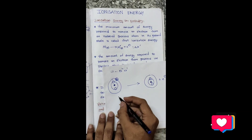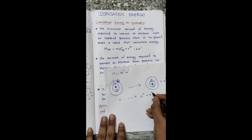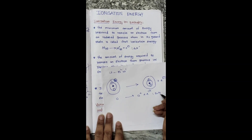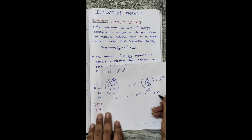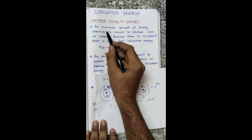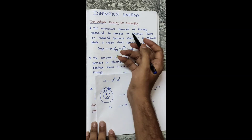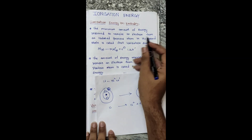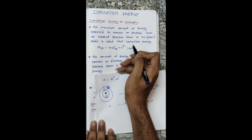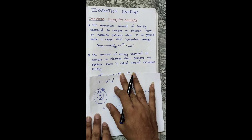Lithium changes to lithium ion plus electron — delta H is the first ionization enthalpy or energy. The minimum amount of energy required to remove an electron from an isolated gaseous atom in its ground state is called the first ionization energy.